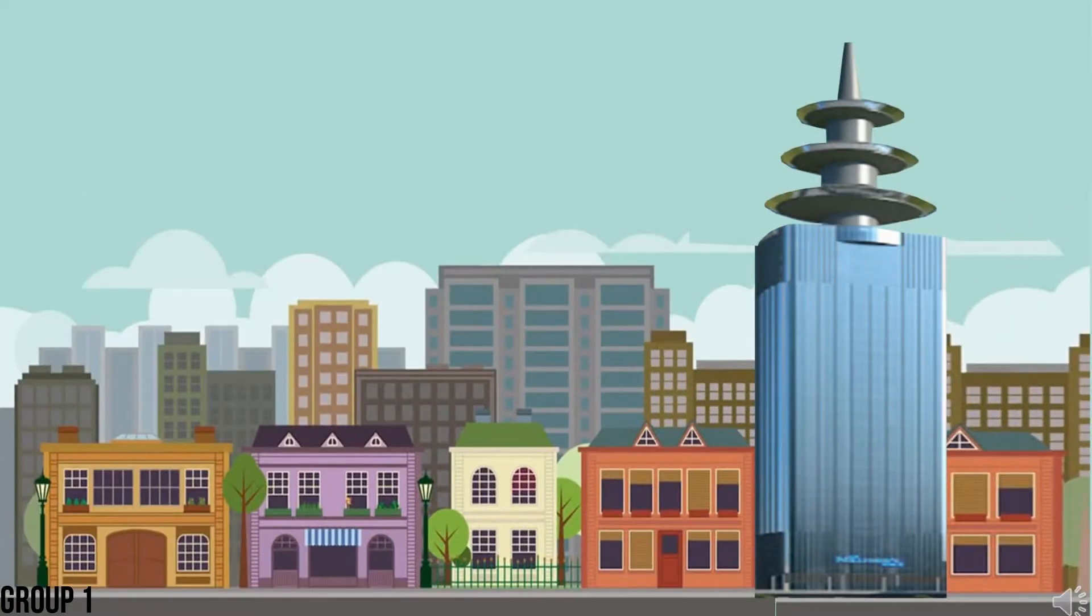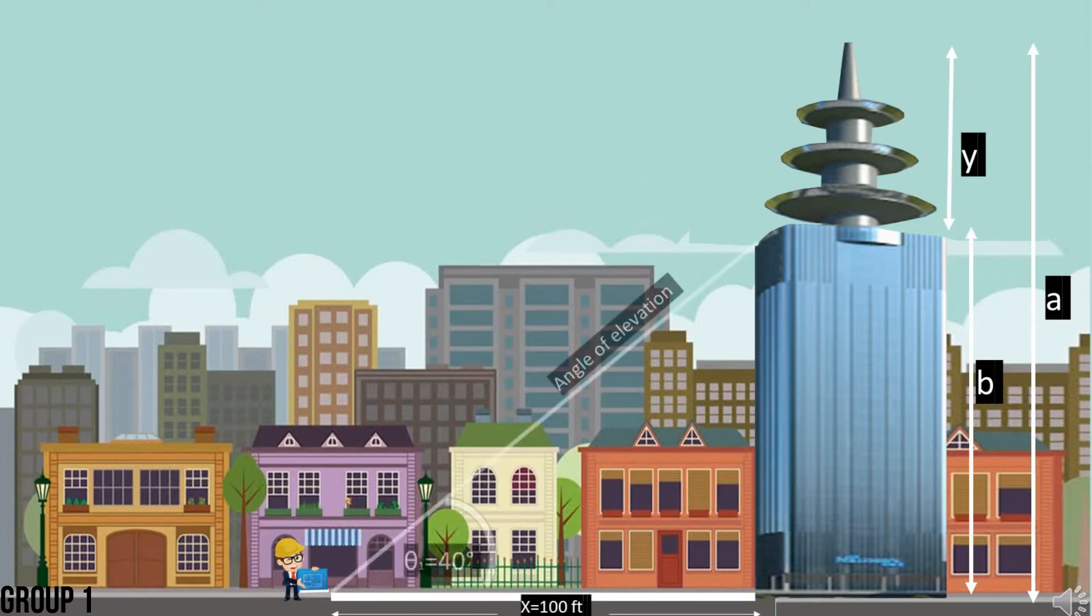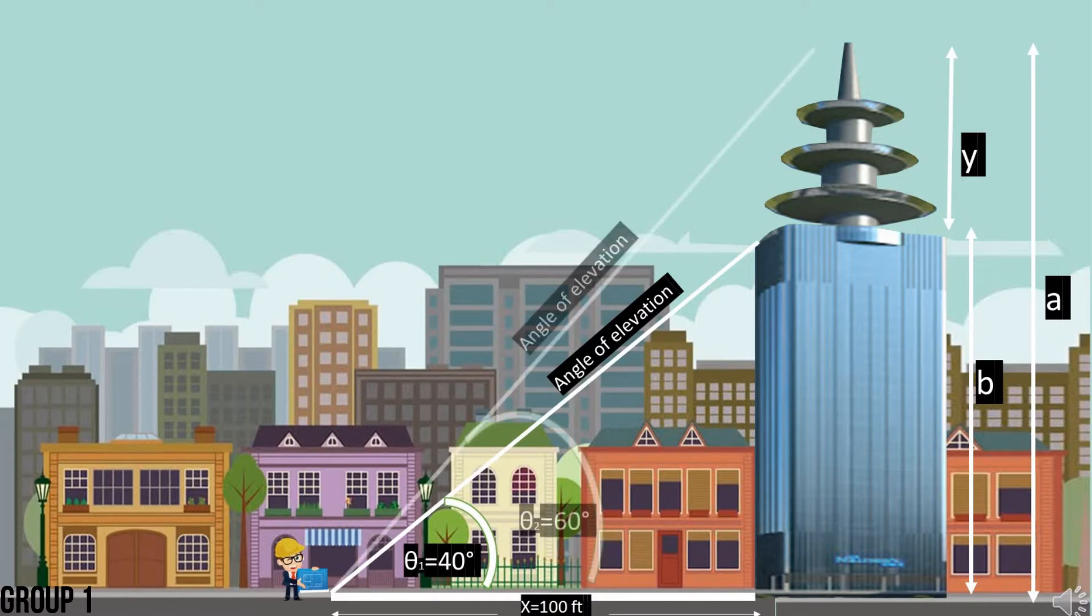The structure was composed of two parts, the upper and the lower sections. From an engineer's location 100 feet from the base of the tower, the angle of elevation of the top of the lower section is 40 degrees. The angle of elevation of the top of the upper section of the tower is 60 degrees. The engineers want to know the height of the upper section of the tower.